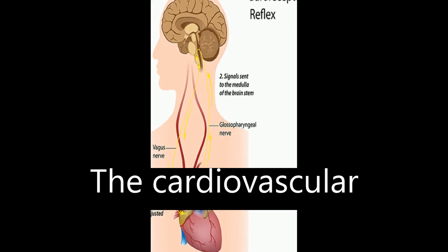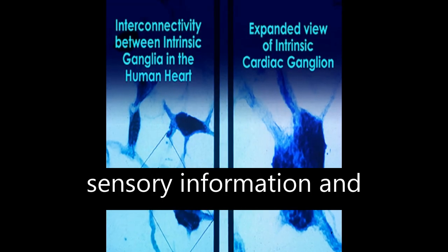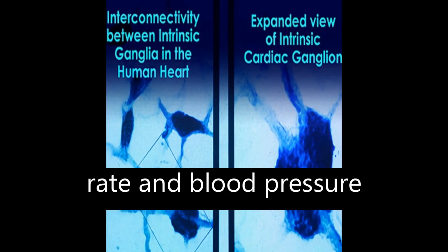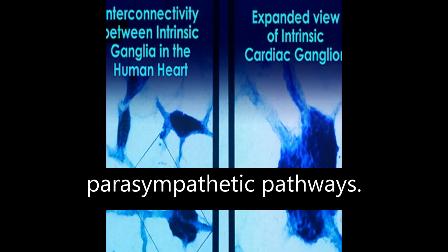The cardiovascular regulation center in the medulla integrates sensory information and input from higher brain centers to adjust heart rate and blood pressure via sympathetic and parasympathetic pathways.